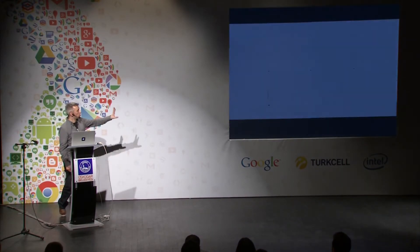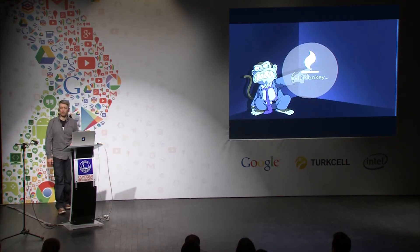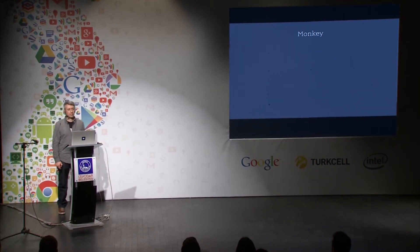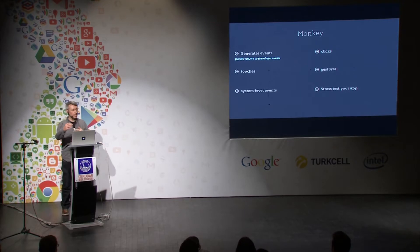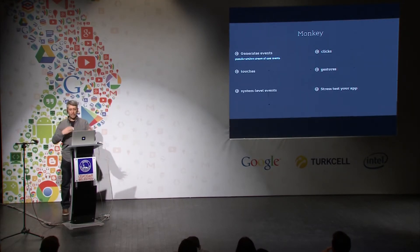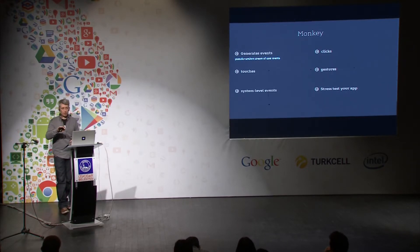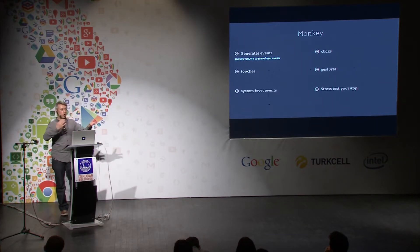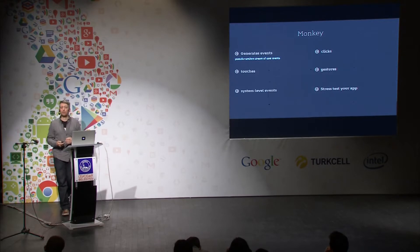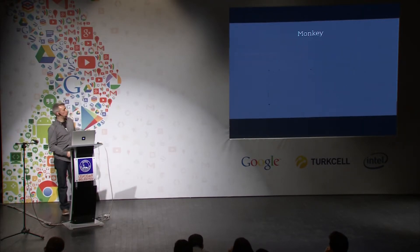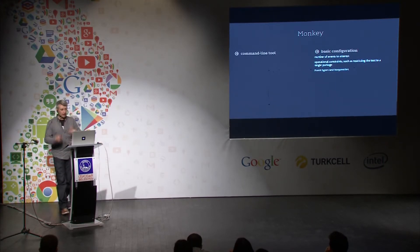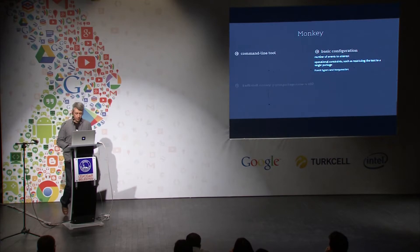Another tool is the Monkey. It's something we do quite often — it's quite an evil monkey because it's stress testing the application. It's a tool you can find in the Android SDK that just does all kinds of random events, sending them to your application. We do this from time to time to make sure we catch cases during development. It's a command line tool — you just fire off a command and it sends all these random events.